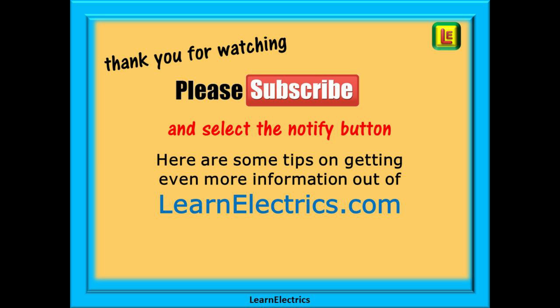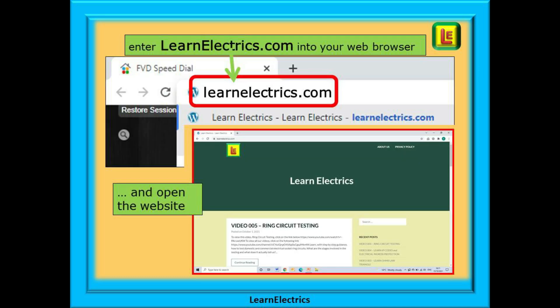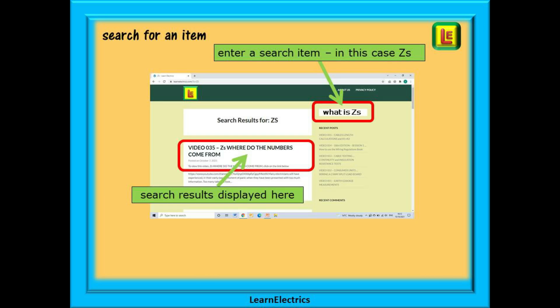Here are some tips on getting even more information and help out of learnelectrics.com. At your web browser enter learnelectrics.com into the search bar. You now have a couple of choices. You can search for a help item or any video by entering a keyword into the search bar on the right. Click on return and all the help files and videos with that word in the title will be listed for you. They will be shown with a short description and each video listed will have a link shown that will take you directly to that exact YouTube video.